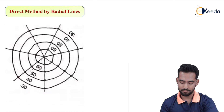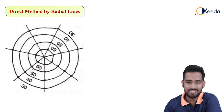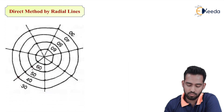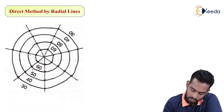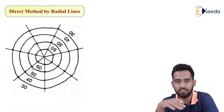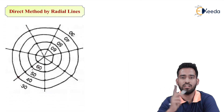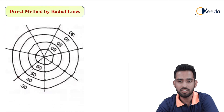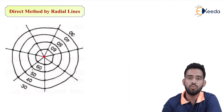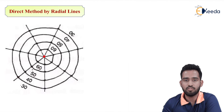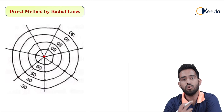As we can see in the figure, from a single station we have drawn different radii and from these radii we have to draw the contours. This method is used for hilly regions. Wherever there is a hilly region and we can use a single point to do all the survey, we use radial lines. We have to establish a station point from where we can control the whole survey work.